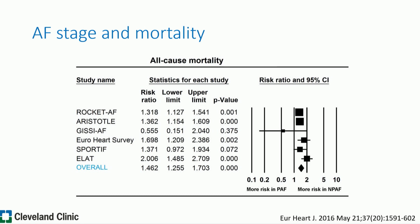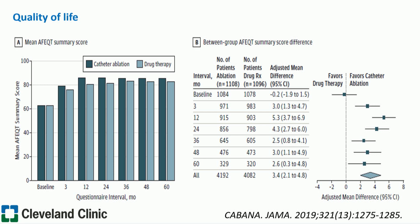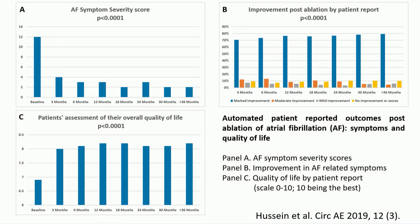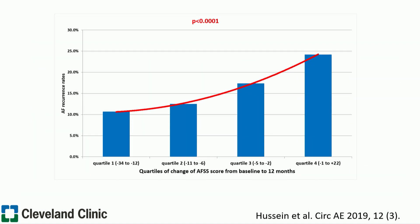Additional data show that with more advanced AFib there is increased mortality. For symptomatic patients, more advanced AFib and more burden equals more symptoms. This is also supported by findings from the CABANA trial, where a more aggressive rhythm control strategy resulted in significant improvement in quality of life. Our own data with patient-reported outcomes show that after AFib ablation, more than 80 to 90% of patients report improvement in quality of life and AFib symptom severity score, and with less burden of AFib over time, there is a more significant improvement in quality of life.